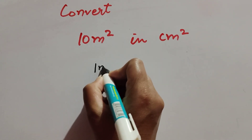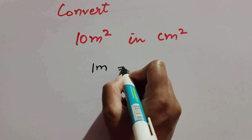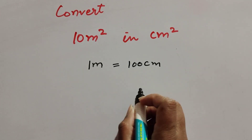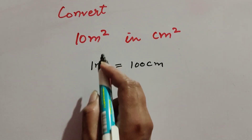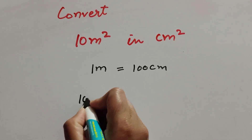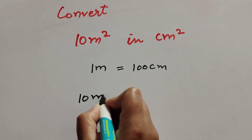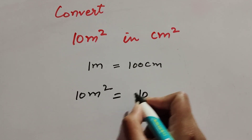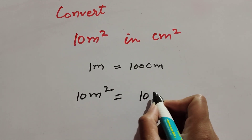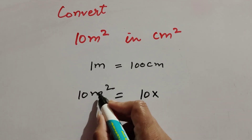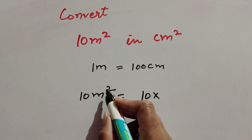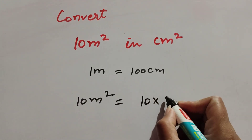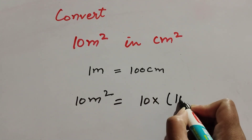We know 1 meter is equal to 100 centimeter, and the given value is 10 meter square. So it is equal to 10 x meter square, and since 1 meter is equal to 100 centimeter, we substitute that in.